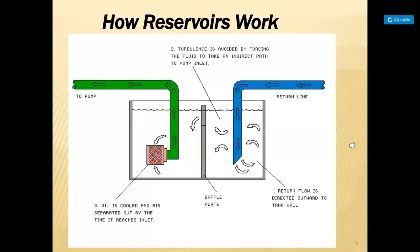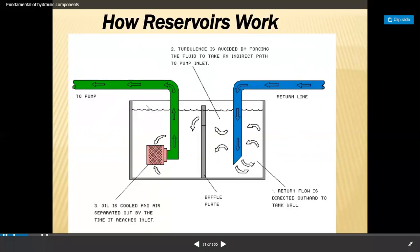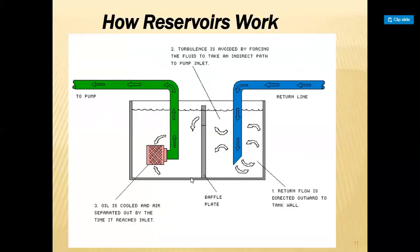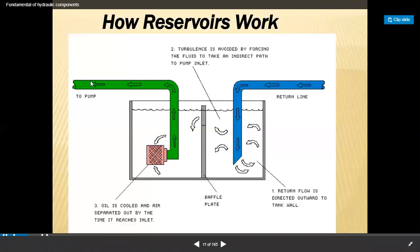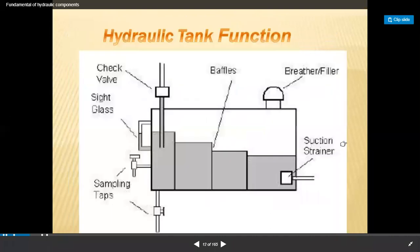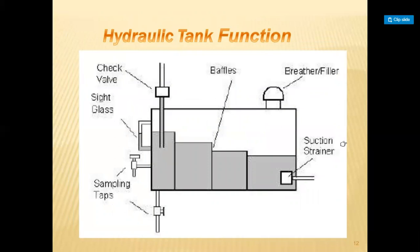How the reservoir works: a pump is placed on the reservoir and pumps the fluid from one place to another. You can see the green arrow indicating pumping — oil is cooled and air is separated out by the time it reaches the inlet. The blue color line shows the returning line — fluid flows through the hydraulic system, converts to mechanical work, and finally returns through the return line directed outward to the tank wall.